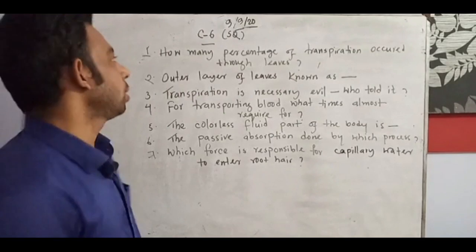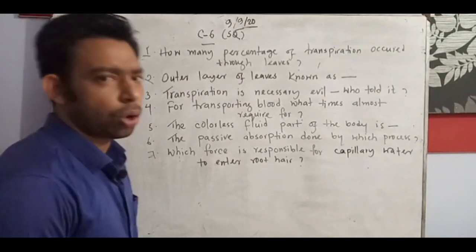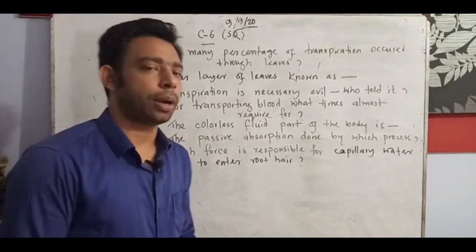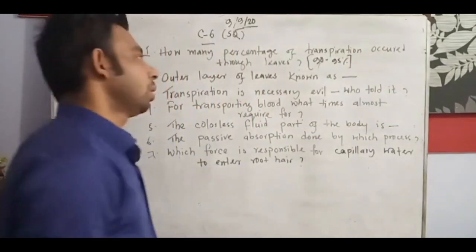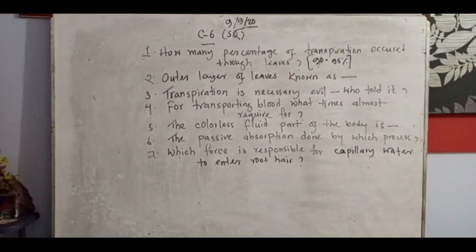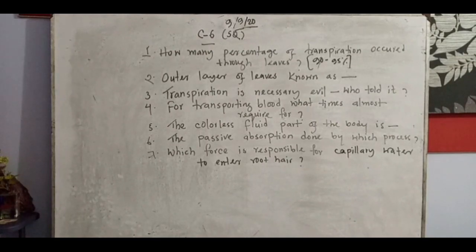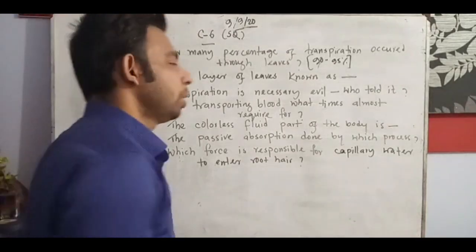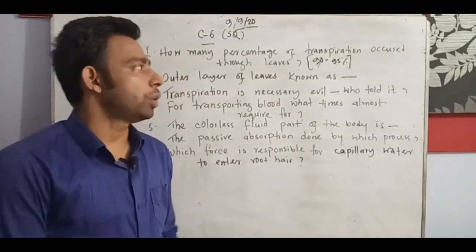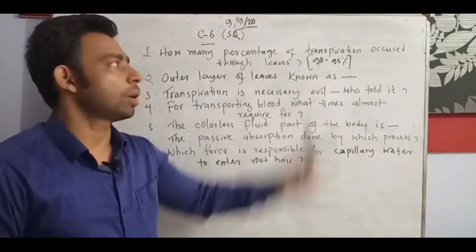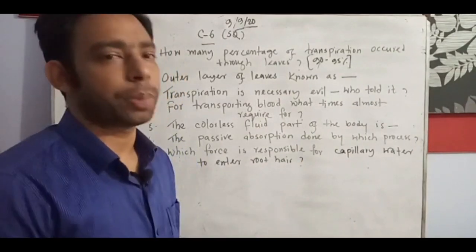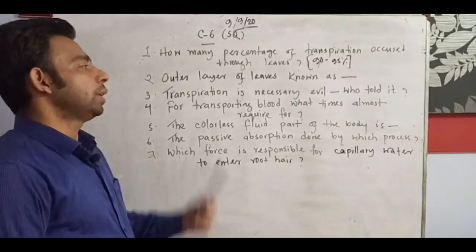The first question: how many percentage of transpiration goes through leaves? We cannot have an exact calculation, but almost 90 to 95 percent of transpiration goes through stomatal transpiration — that means through the stomata, almost 90 to 95 percent of water goes through this process. There are three kinds of transpiration: cuticular, lenticular, and stomatal. Stomatal transpiration through the leaves is almost 90 to 95 percent; the other five to ten percent occurs through other parts.